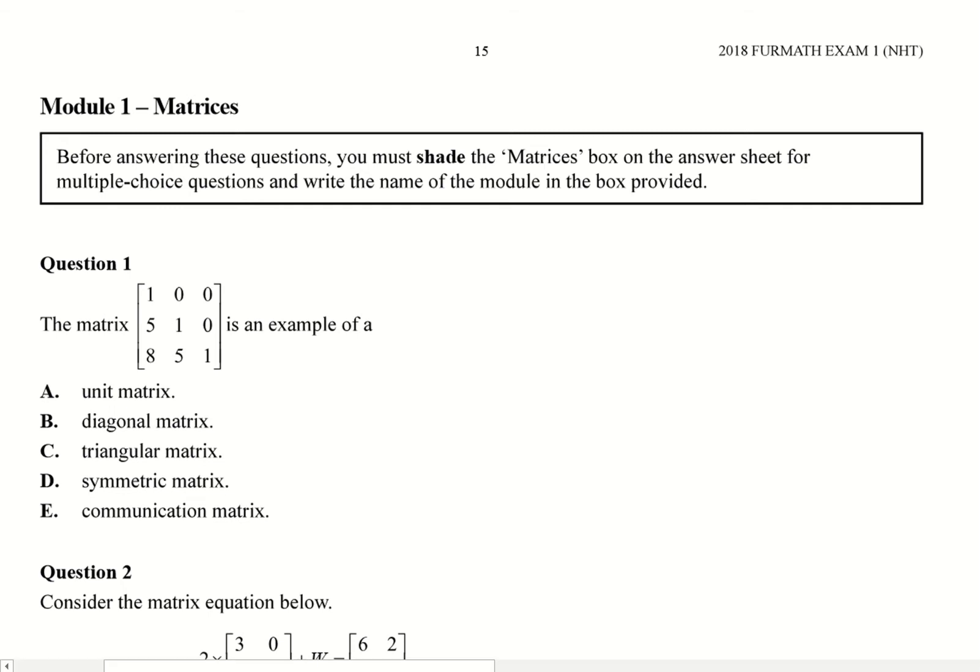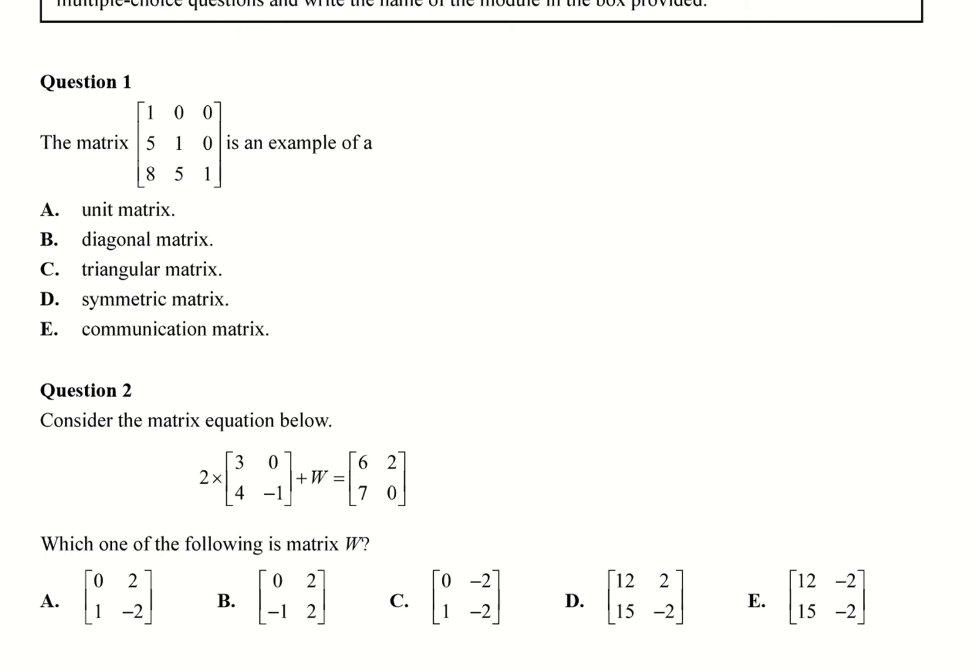So question 1, we've got here this matrix, which is an example of what. What you need to look for in this one is where you've got the main diagonal and you've got a bunch of numbers underneath there. So in this case, this is an example of a triangular matrix. Specifically this would be a lower triangular matrix, but they're not asking for that definition. This would be a triangular matrix.